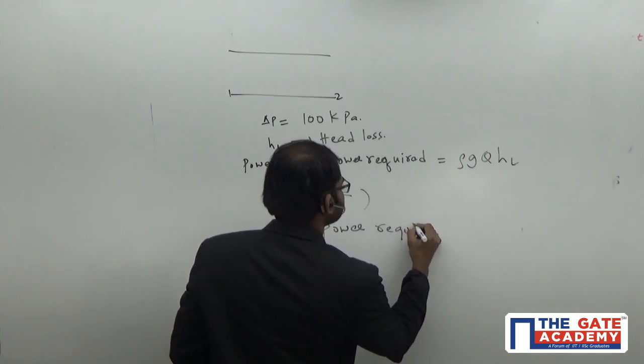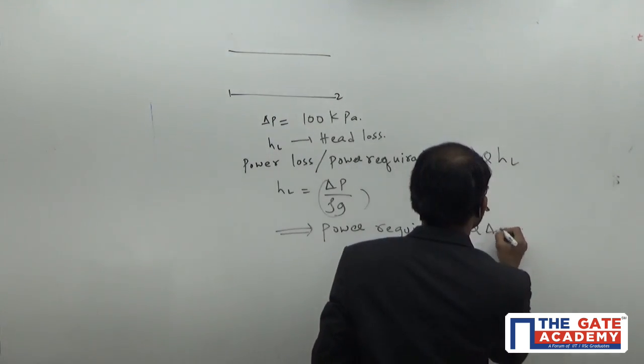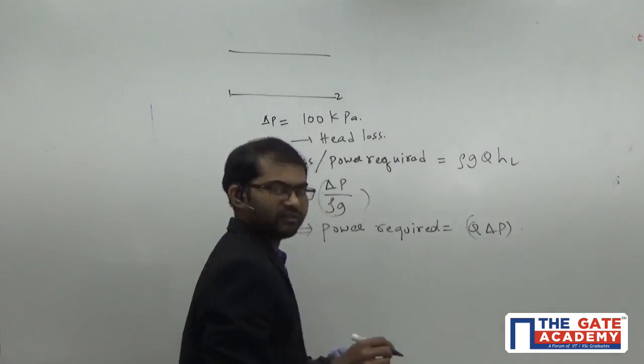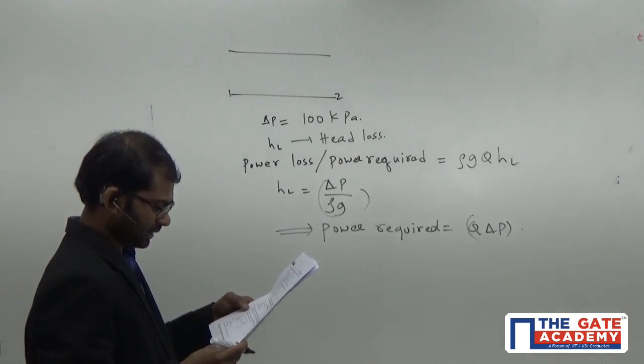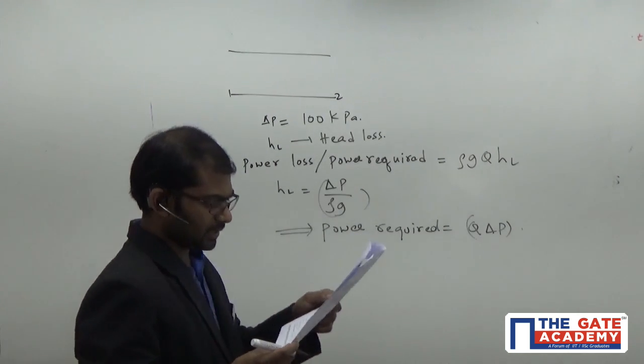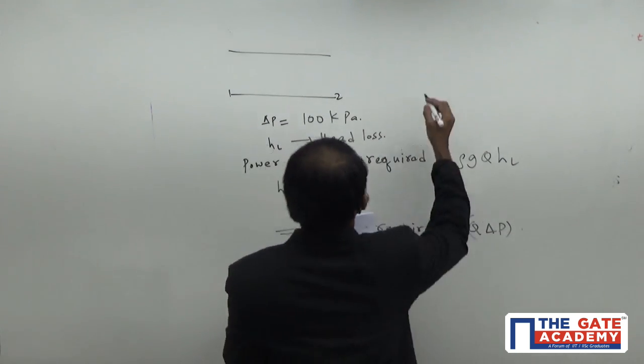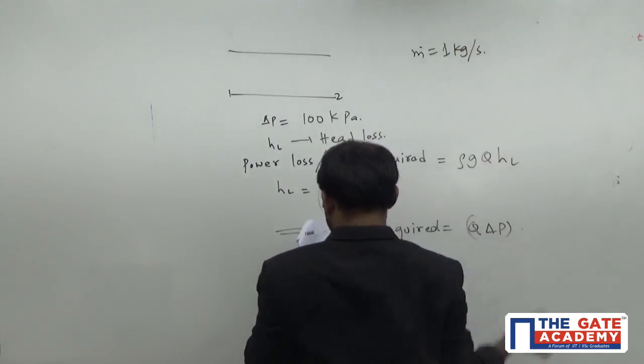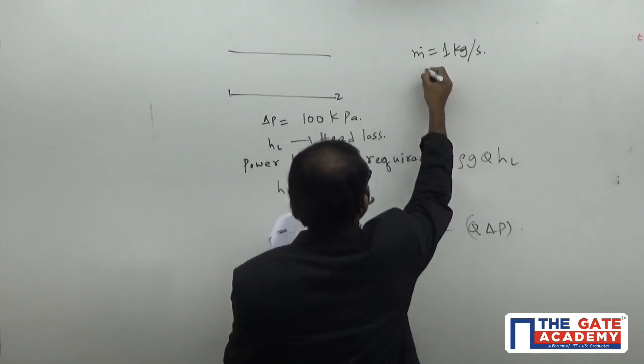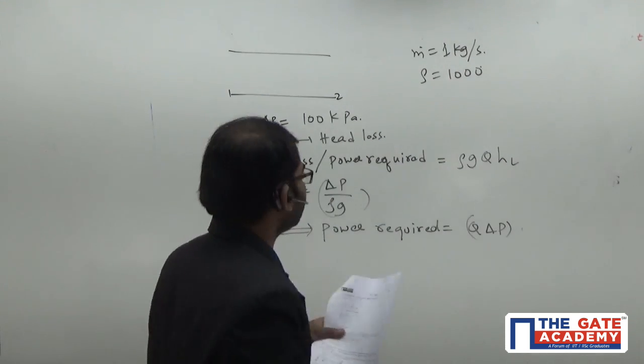Here, so we have to get the value of Q here. But in this question, if you read out this data here, in this one it's given as the mass flow rate of the liquid is given as 1 kg per second. So m dot is equal to 1 kg per second, and its density is equal to given by 1000.